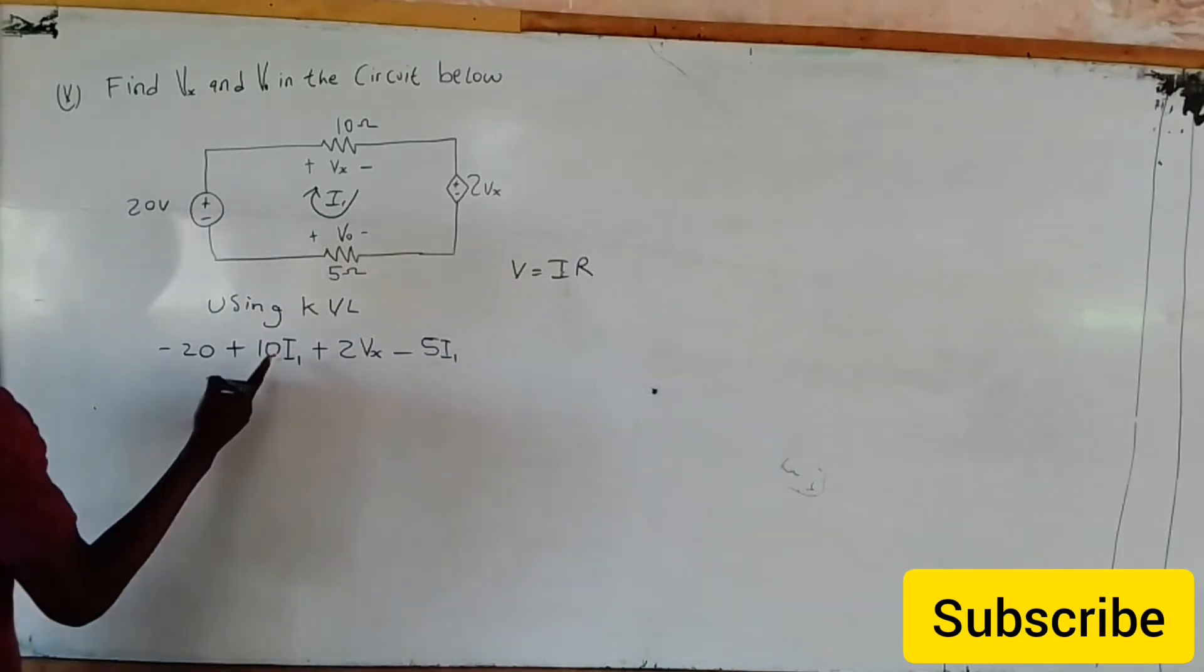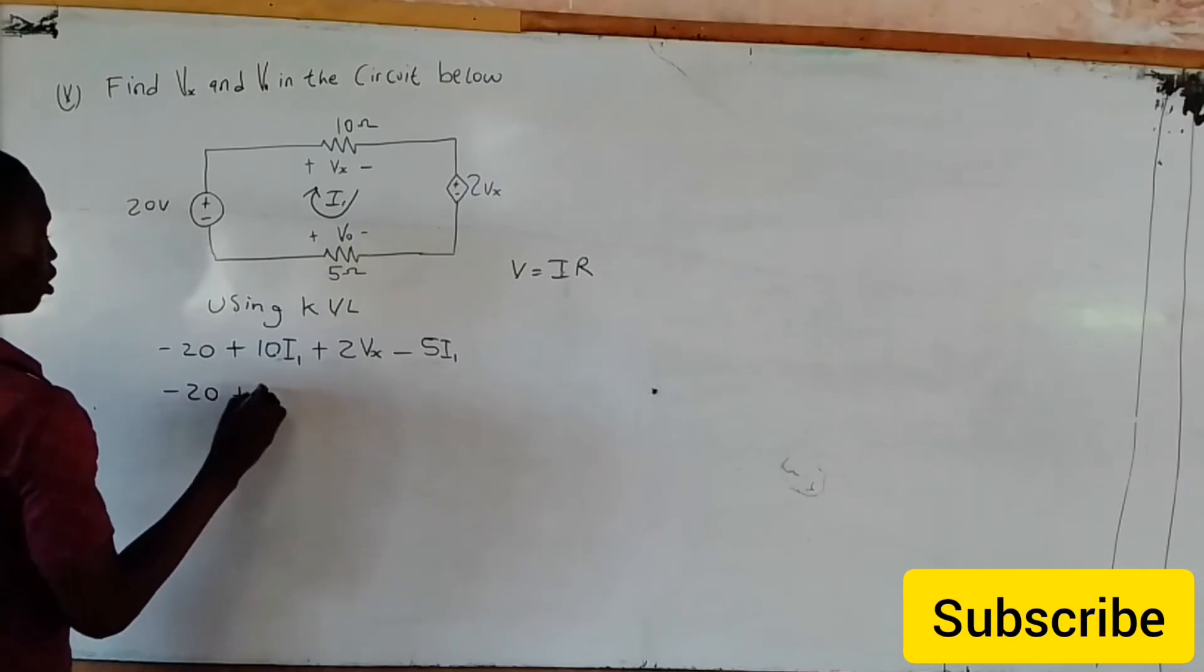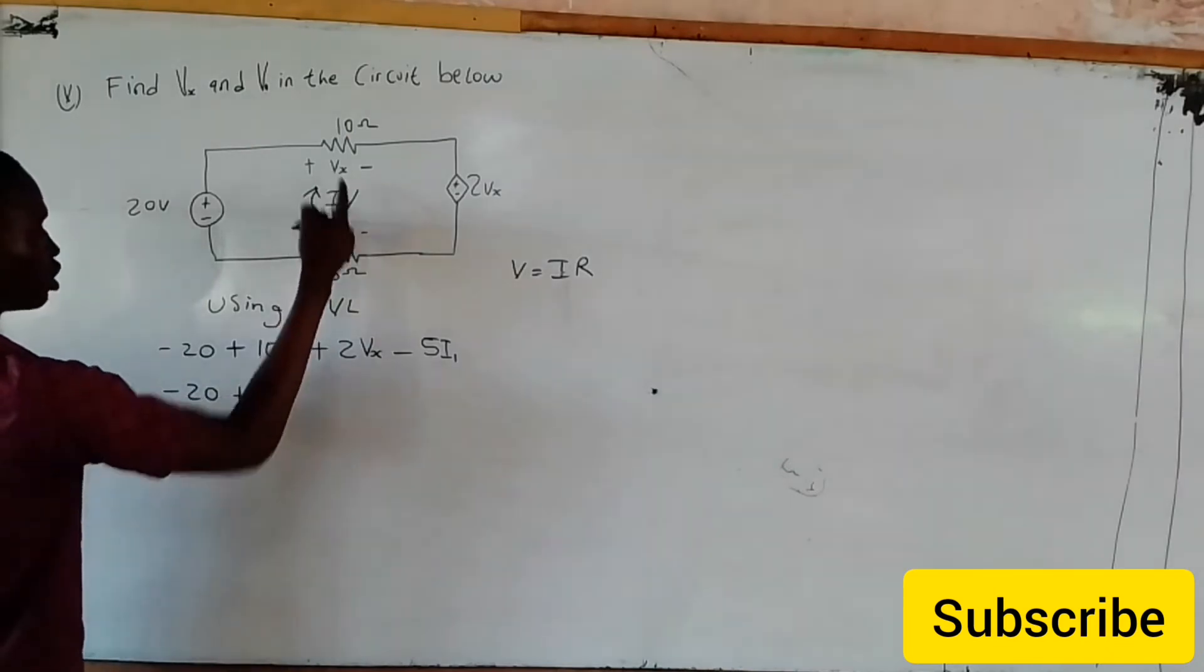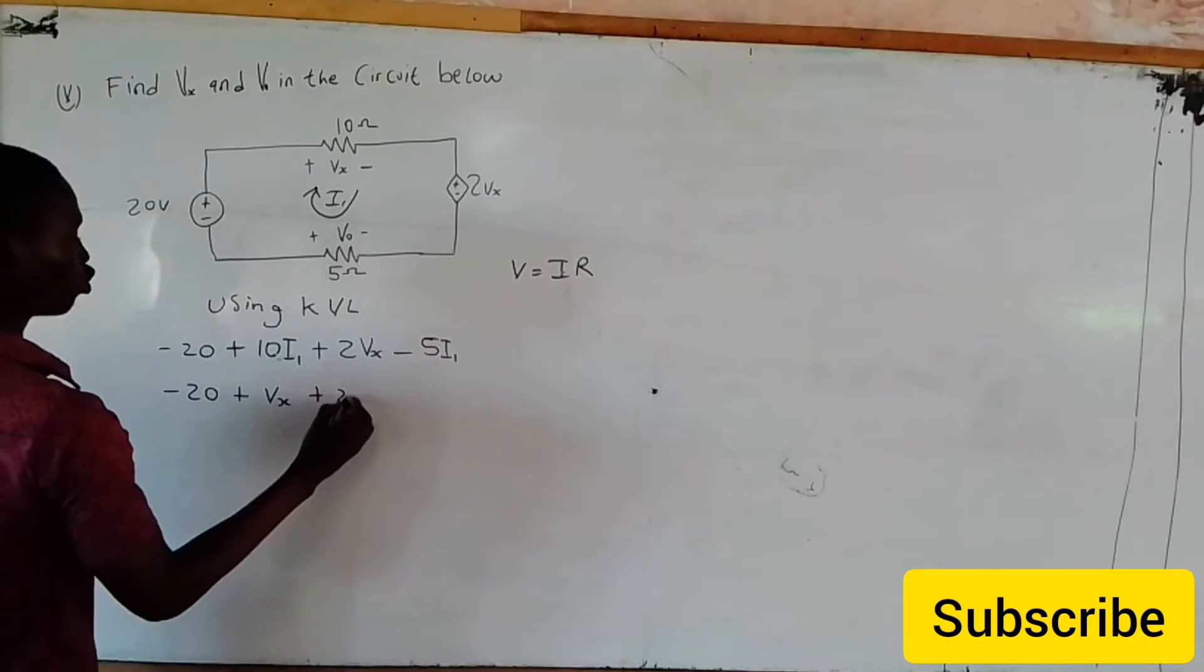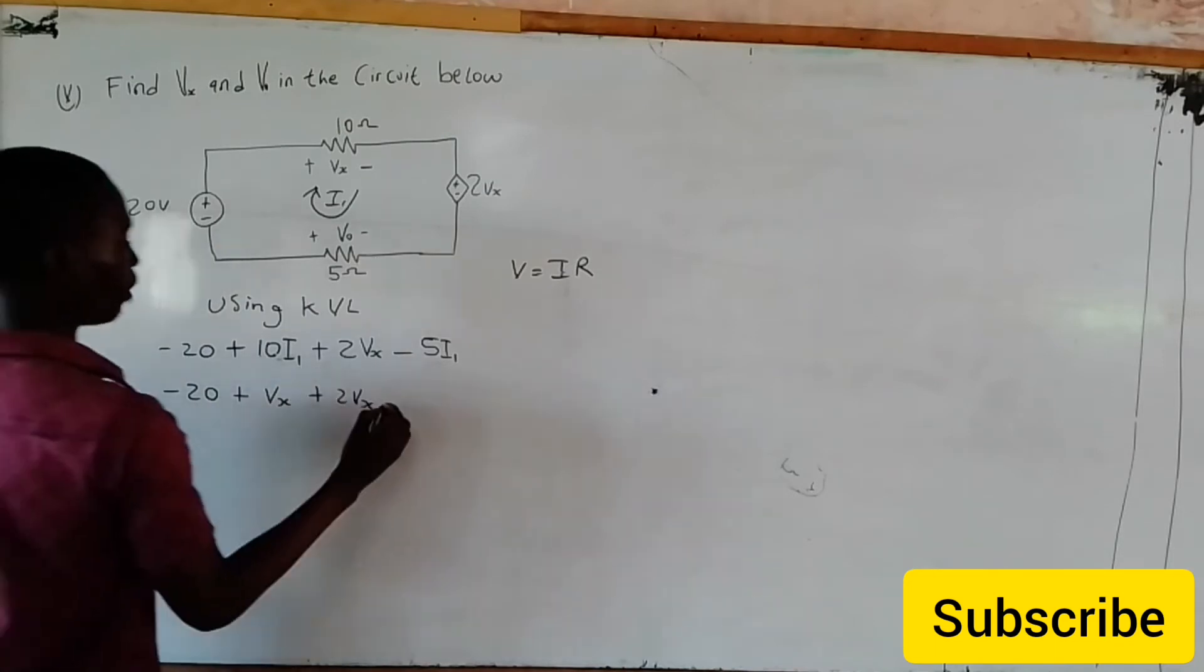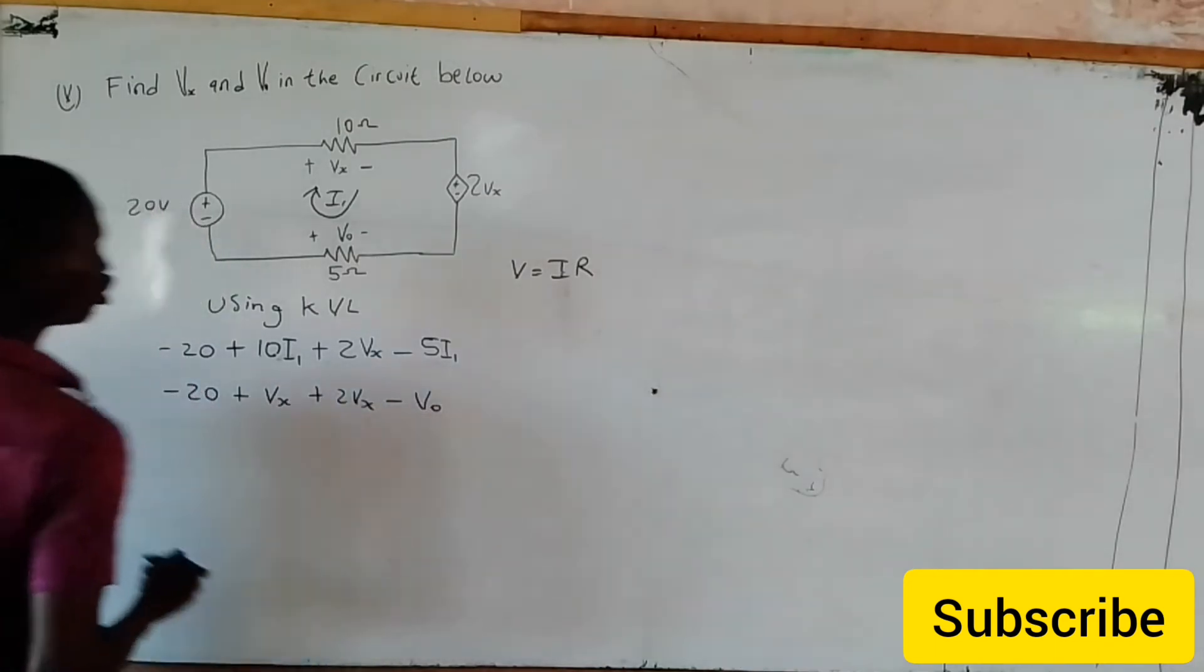This could also be written as minus 20 plus Vs, which is here, plus 2Vs minus V0. Give me why.